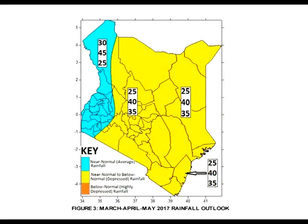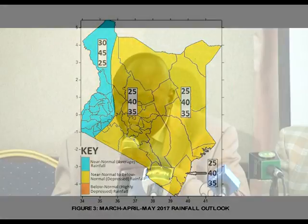The specific outlooks for the March to May 2017 long rains season, shown in figure 3, indicate that much of the country is expected to receive generally depressed rainfall — you can see most of it colored in yellow. Only the areas shown in cyan are likely to experience near-normal rainfall, which is focused on western counties. Counties in the central and southern Rift Valley are also likely to see near-normal rainfall.